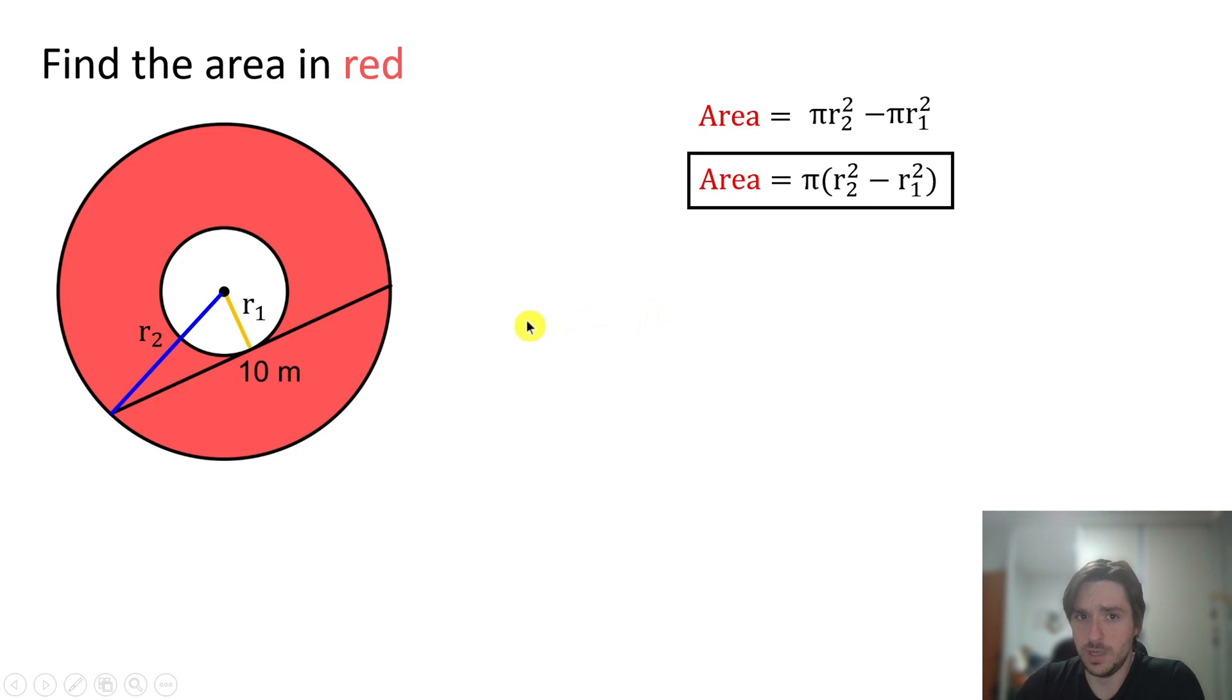So how are we going to proceed? We're going to proceed by knowing that since this line here is tangent to the inner circle, the angle that this line forms with the radius r1 is a right angle. Consequently, we have here a right triangle. Let's detach this right triangle.